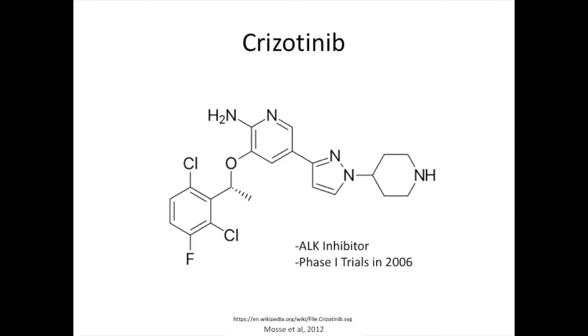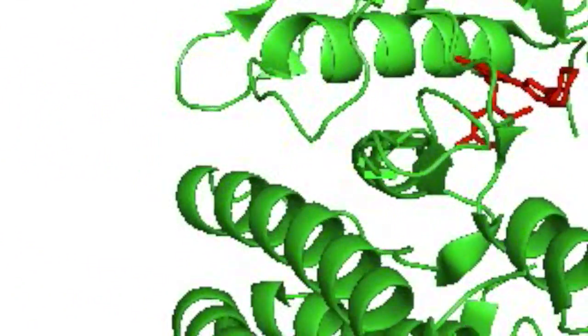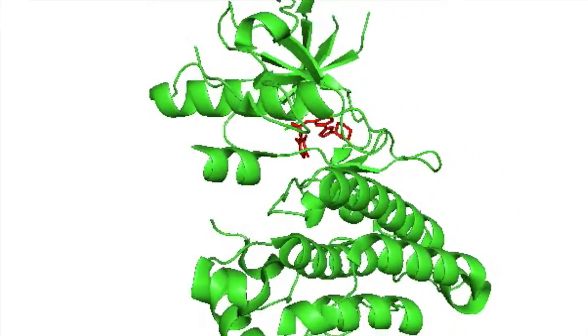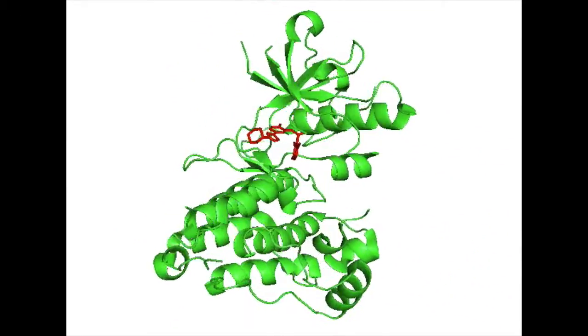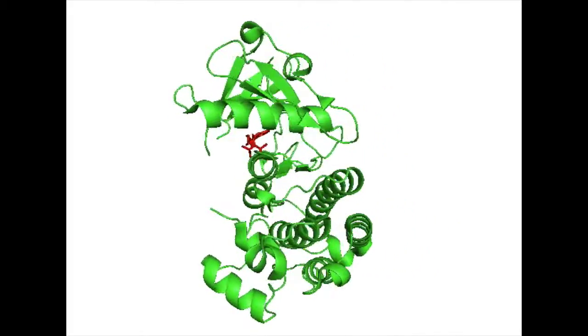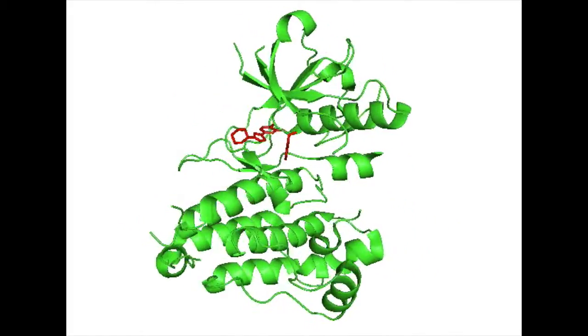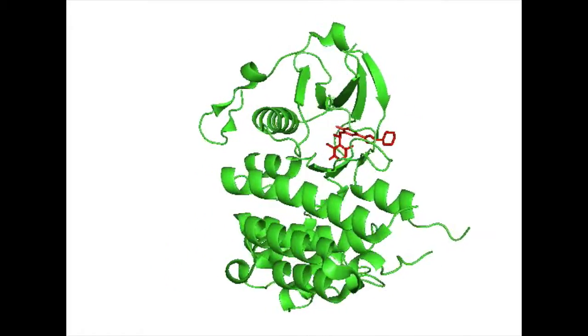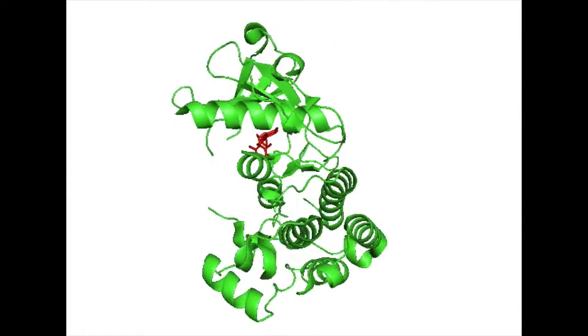Crizotinib entered Phase I clinical trials in 2006. Crizotinib, shown in red, competes with ATP for the anaplastic lymphoma kinase binding site. This competitive inhibition prevents the overexpression of the MAP kinase signaling pathway, which, as previously discussed, would cause unregulated cell growth and, ultimately, tumor formation.